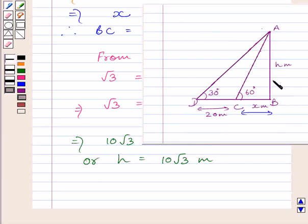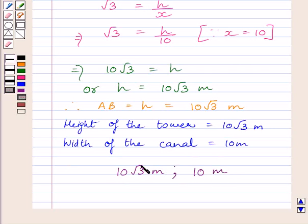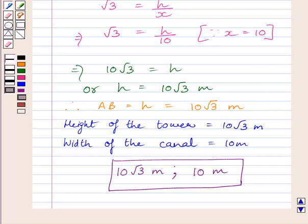We know H is the height of the tower. So AB equals H equals 10 root 3 meters. Therefore, the height of the tower is 10 root 3 meters and the width of the canal is 10 meters. This completes the session. Hope you understood the solution. Take care and have a nice day.